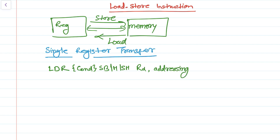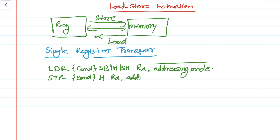This is the addressing mode. I'll tell you about this addressing mode later. Similarly we have STR, that's the store register instruction which stores data into the memory, and then we have an optional condition and here half word, then Rd, and then finally we have the addressing type.